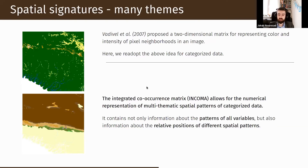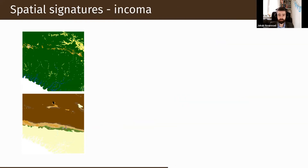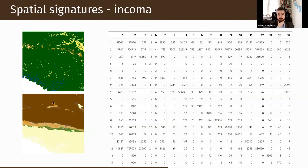We looked for a solution for some time and found suggestions in the area of image recognition, where an extension of the co-occurrence matrix was proposed to represent color and intensity of pixels in regular images. With some slight changes, this idea could also be incorporated into categorical rasters. We adapted this idea from image recognition and called it the Integrated Co-occurrence Matrix, or ICoM, to represent multi-thematic spatial patterns in a quantified way.